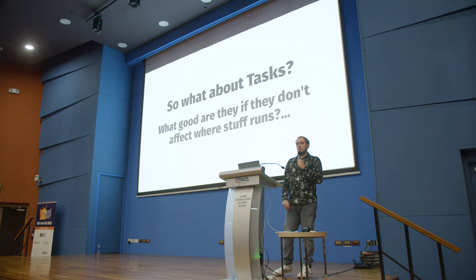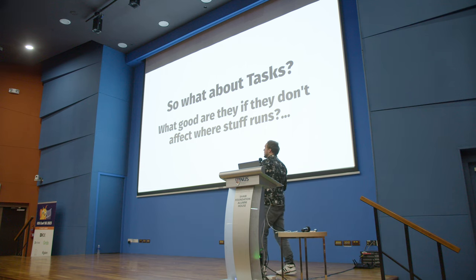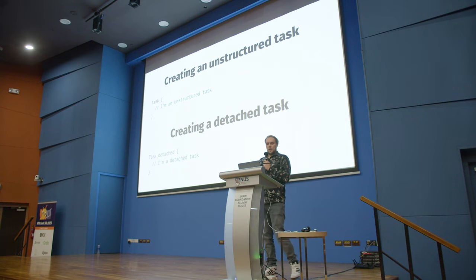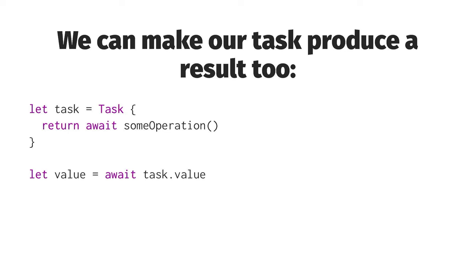What about tasks? You might think that creating a new task is similar to creating a new dispatch queue. But what good are they if we can't use them to decide where our code runs? There are two kinds of tasks: an unstructured task and a detached task. An unstructured task inherits a bunch of things from its creation context, while a detached task does not. It's also good to know that tasks can produce results — we can await the value of a task, and if it might throw we try await it.